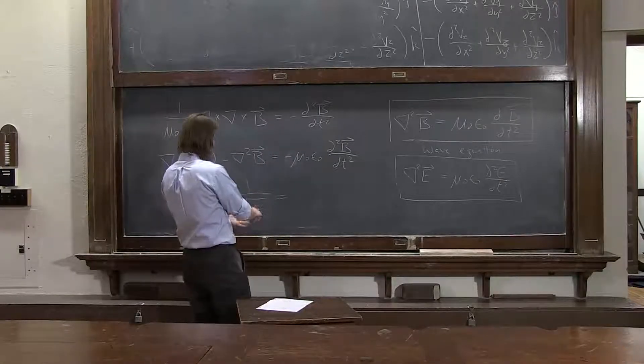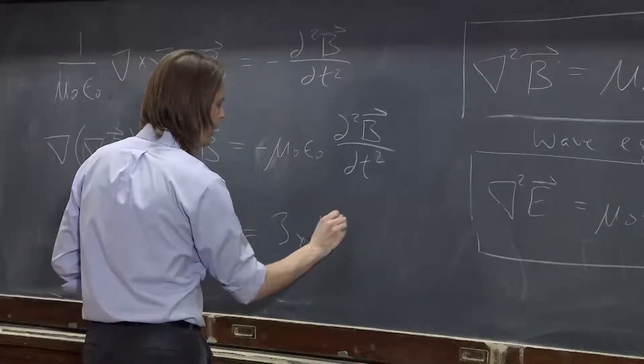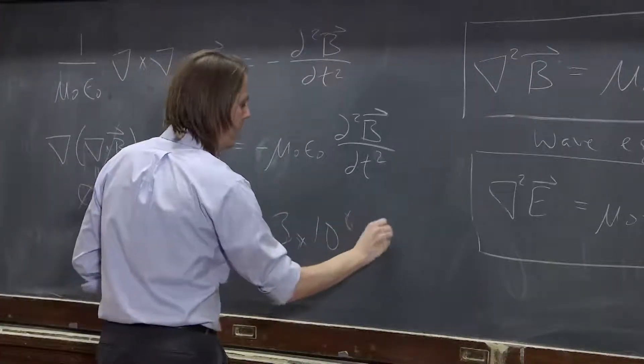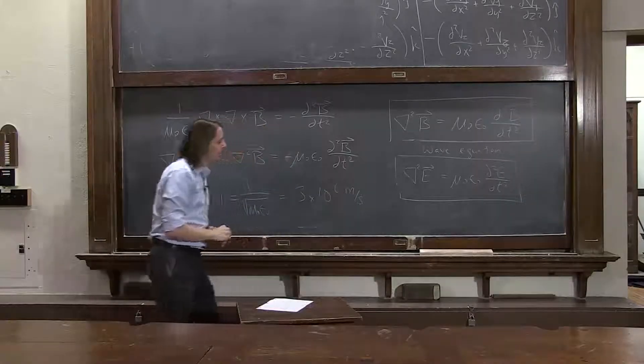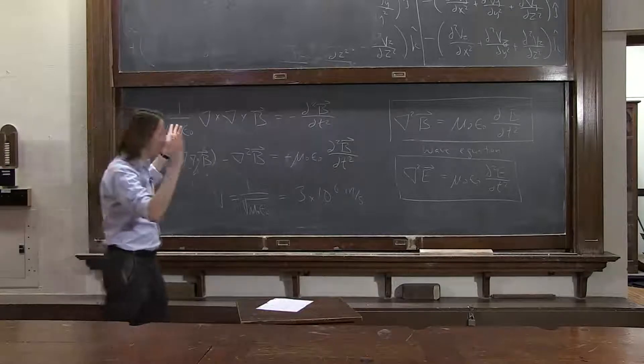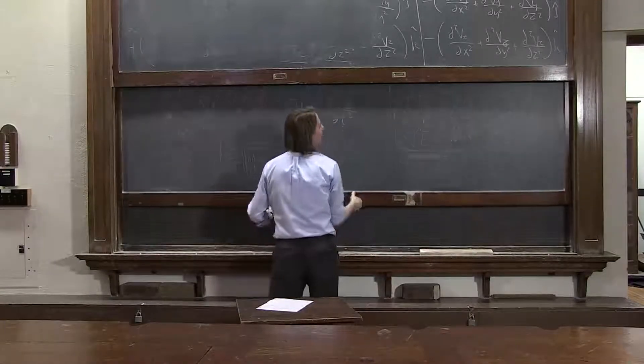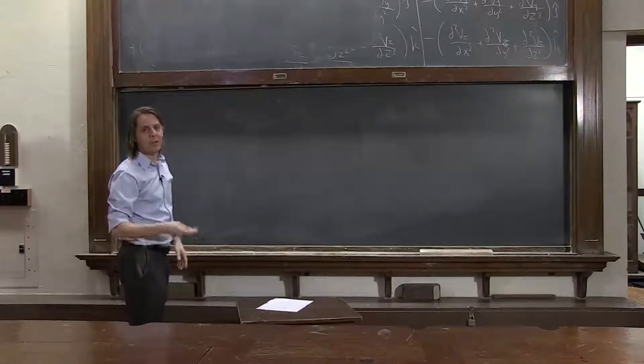Because once you get the numbers, and you plug them in, and you can do it with our numbers, it's about 3 times 10 to the 8 meters per second. So this is how you get from electromagnetism to light. And then you can go crazy and go into optics. And you can start to study what kind of equations or what kind of waves will solve those equations.